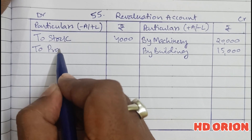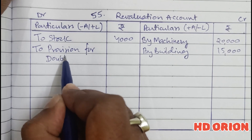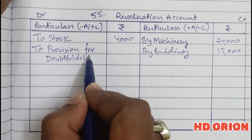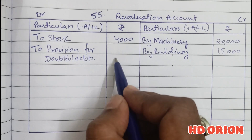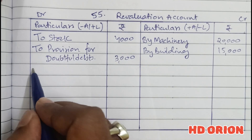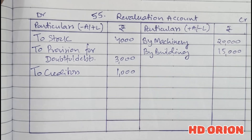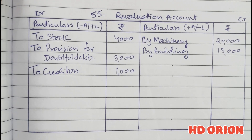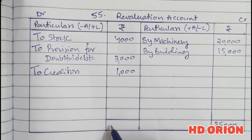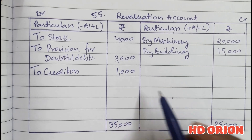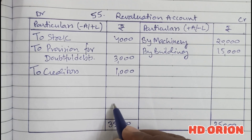Provision for bad and doubtful debts is 5% of debtors, so 5% of rupees 60,000 is rupees 3,000. Then creditors of rupees 1,000 are not recorded in the books and now we have recorded it. Only that much in the revaluation account, so the grand total is rupees 35,000. When you subtract the debit items from 35,000, it comes to rupees 27,000.